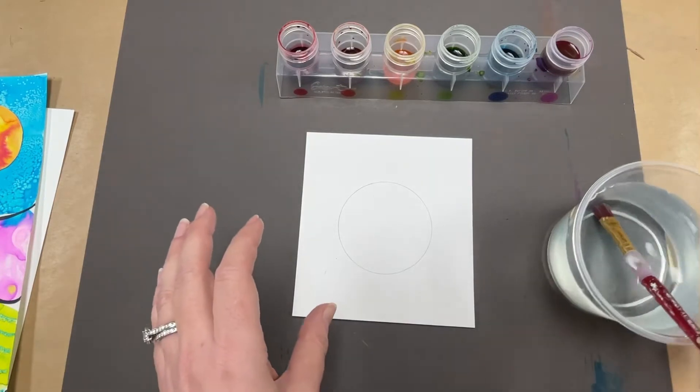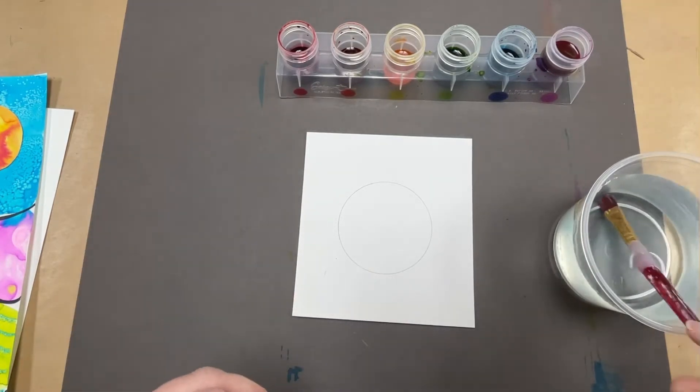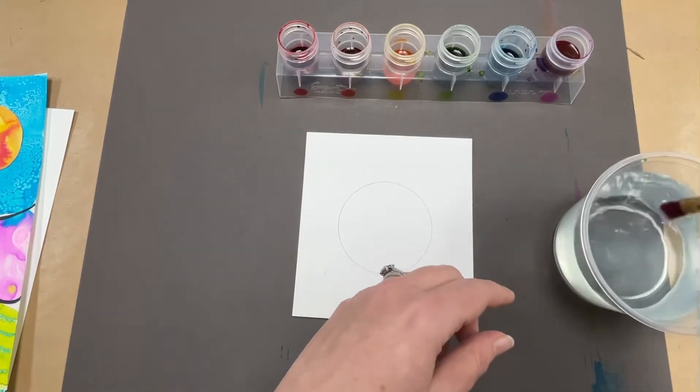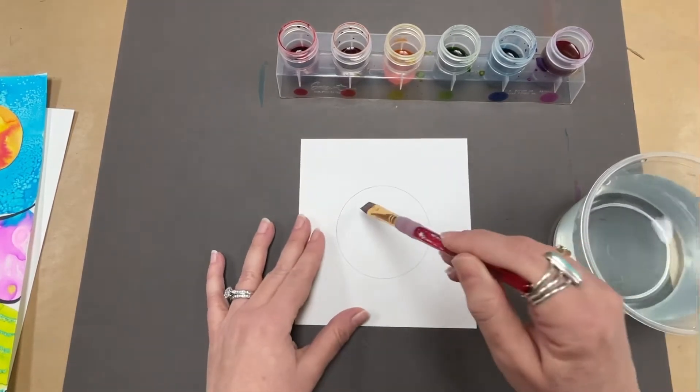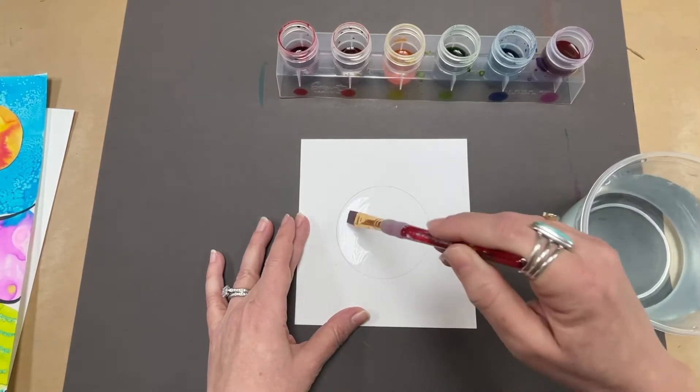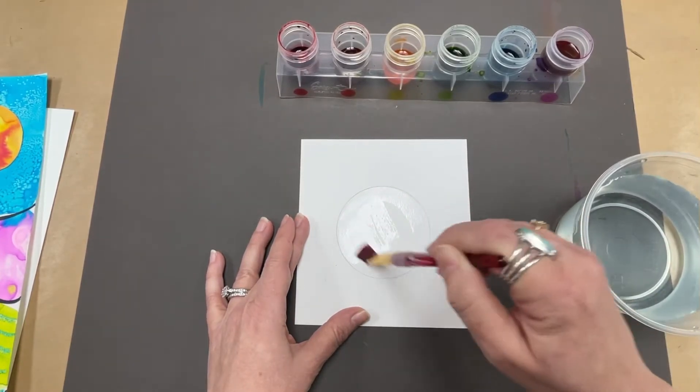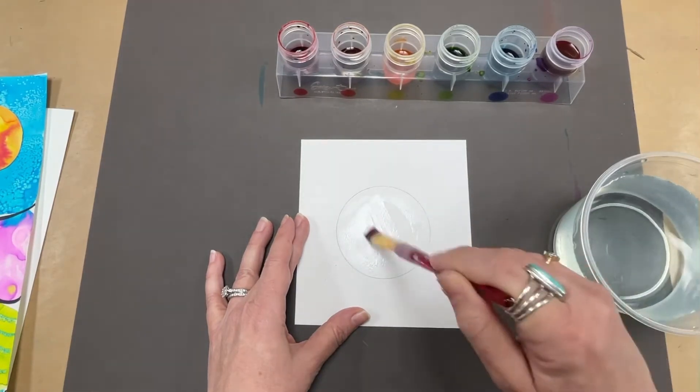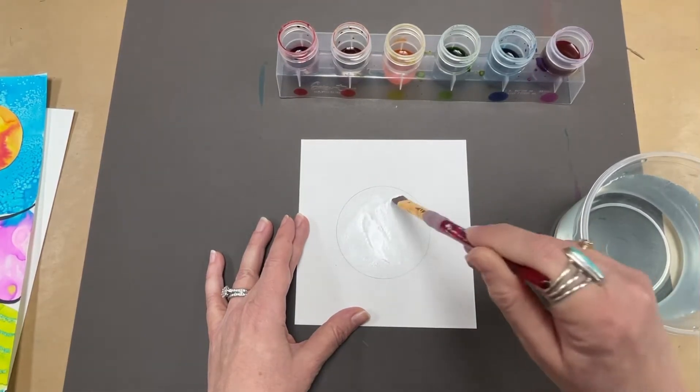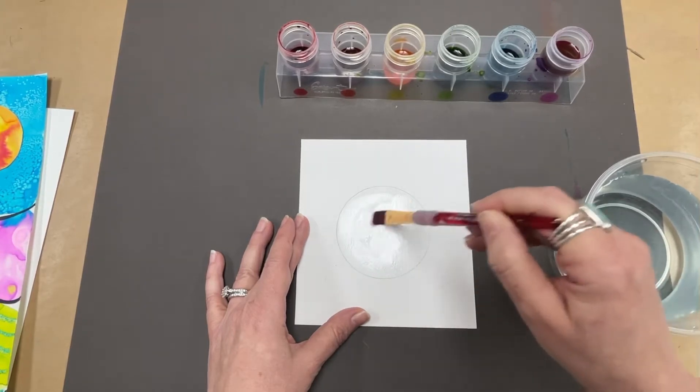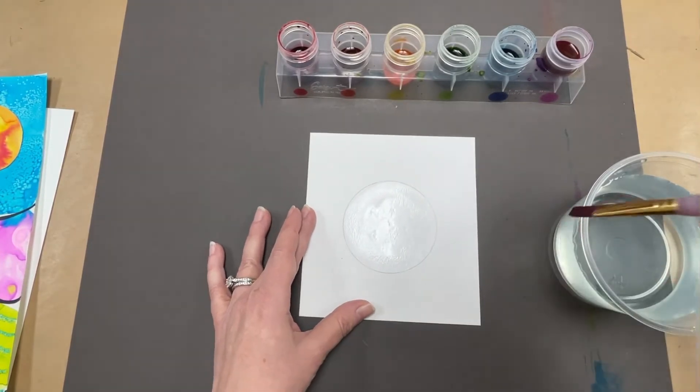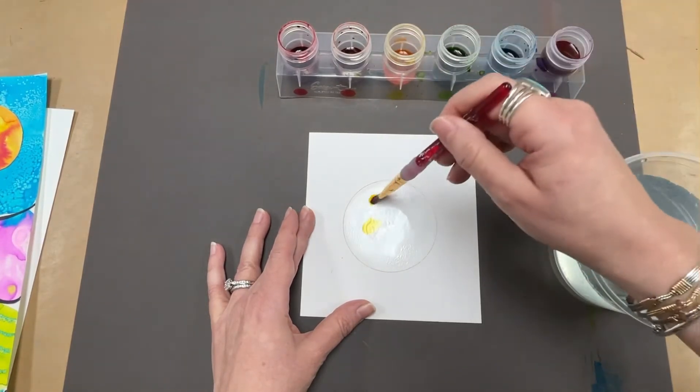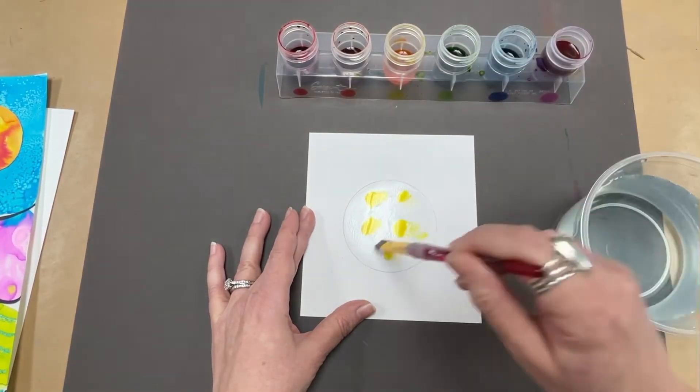We're making a sun so we're going to use our warm colors. The first thing you do is get your brush, you need to have clean water to begin with, and you're going to just paint water on here trying to stay inside of your circle shape. While it's still wet you're going to dip into some warm colors. I'm going to start with some yellow and I'm just kind of going in and making splotches.